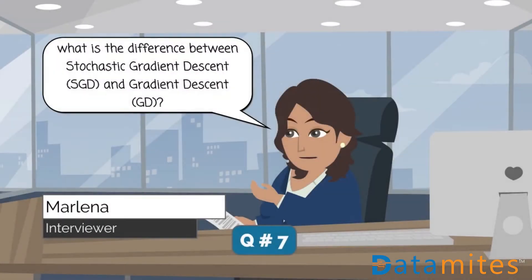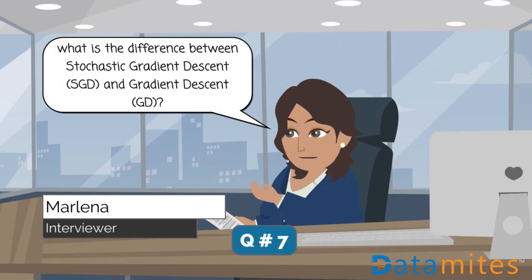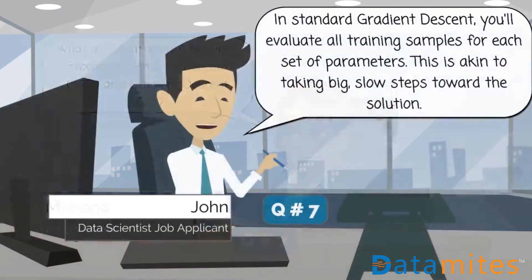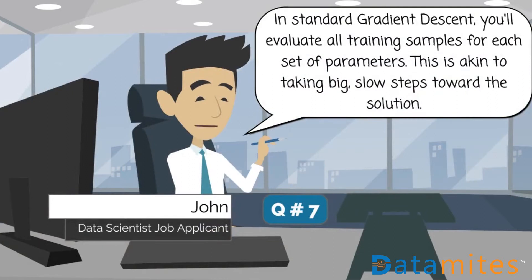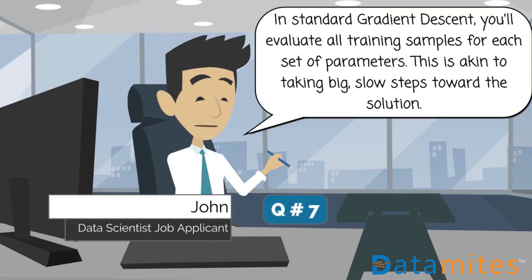What is the difference between stochastic gradient descent, SGD, and gradient descent, GD? In standard gradient descent, you'll evaluate all training samples for each set of parameters. This is akin to taking big, slow steps toward the solution.